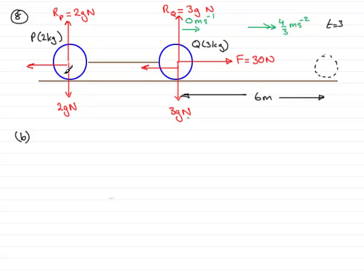Now, we know that friction is equal to mu times R, the normal reaction, because these particles are moving. So, it's reached its limits, that's mu R.